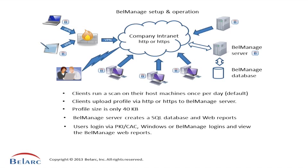Users can then log in with authentication such as PKI CAC cards, Windows, or Bell Manage logins, and view their Bell Manage reports. There are different user types and different levels within the automatic grouping that users can see in their reports, and we'll go on to that in the next slide.